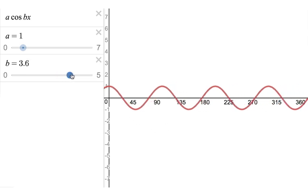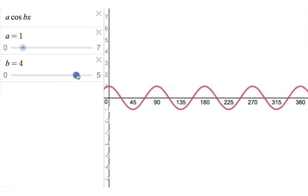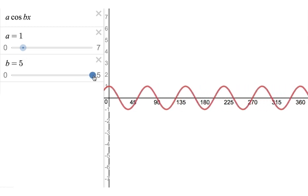And again, if we go up to 4, that produces 4 cycles and up to 5, that produces 5 cycles of the cosine graph from 0 up to 360 degrees. So the value of b tells you the number of cycles you will have from 0 up to 360.